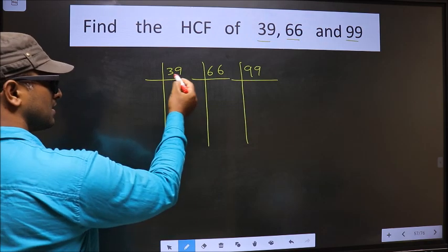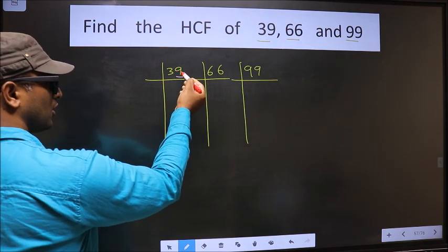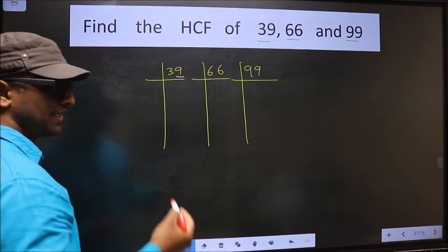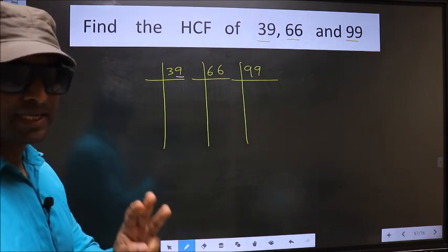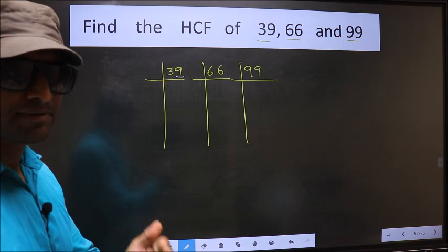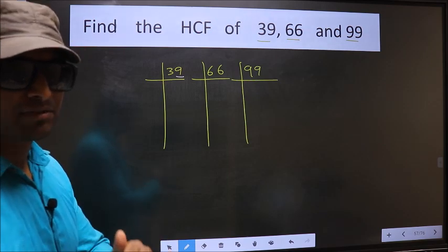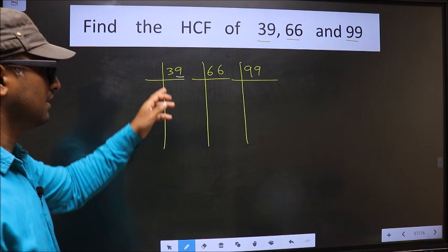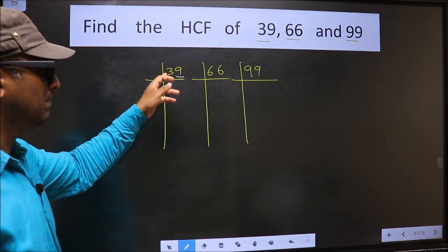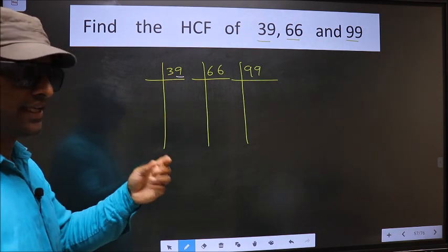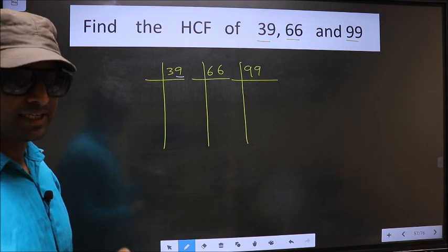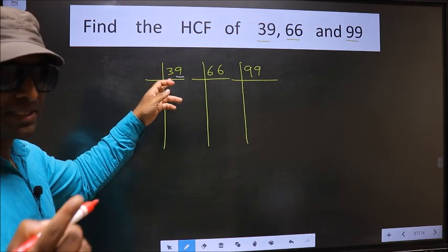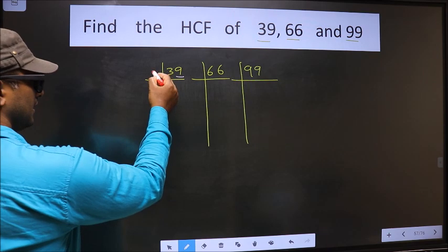For 39, the last digit is 9, not even, so this number is not divisible by 2. Next, prime number 3. To check divisibility by 3, we should add the digits. That is 3 plus 9 equals 12. Is 12 divisible by 3? Yes. So this number is also divisible by 3, so we take 3 here.